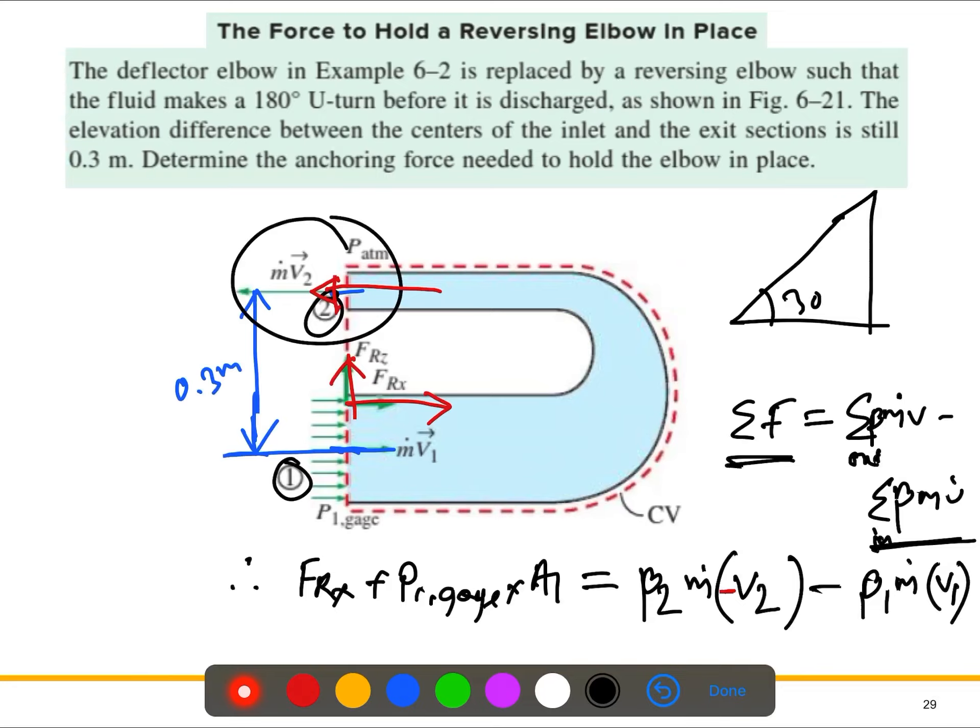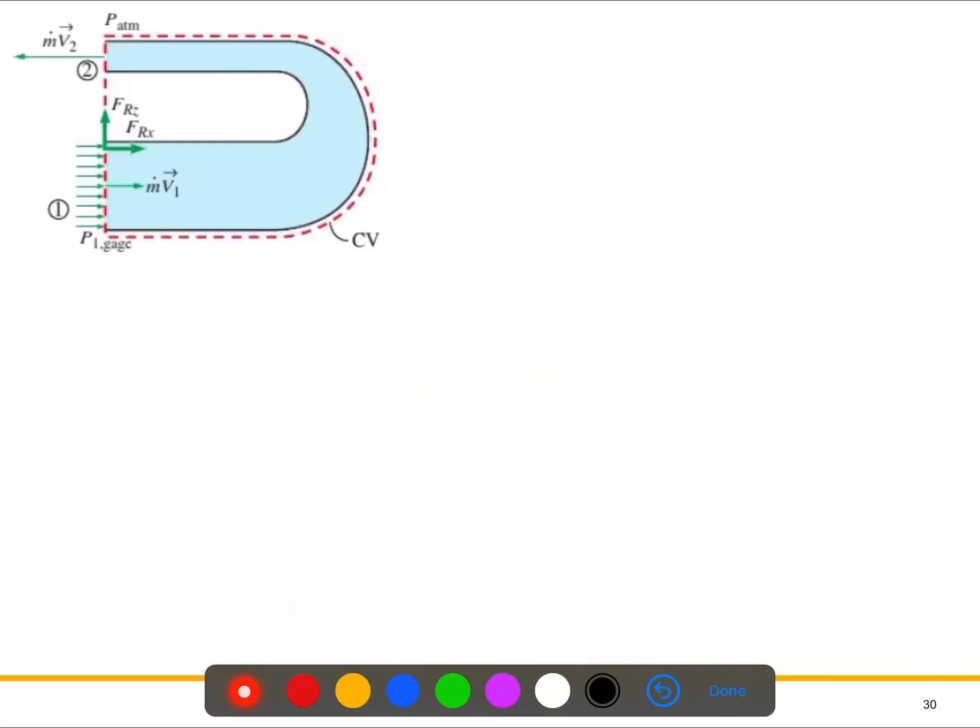Now we're looking for Frx. We can similarly, as it is the same problem, say beta_2 equals beta_1 equals beta. So if we simplify this and write it down, the equation will be: Frx equals negative beta m dot (v2 + v1) minus P1_gauge times area A1.